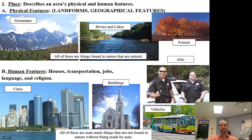Human features — such as houses, transportation, jobs, language, and religion — can also be used to describe an area's place. Think about cities or buildings, skyscrapers — that's a way to describe a place.